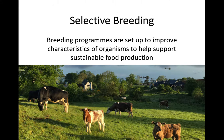Starting off, we're going to go back to talking about selective breeding and remind ourselves of what that actually means. There are breeding programmes set up in order to improve characteristics of organisms to support sustainable food production. We talked about sustainable food production in Key Area 1 and also mentioned selective breeding — these desirable traits that you want from either livestock or crops. We can set up these breeding programmes to pass on desired characteristics onto offspring, and that benefits food production in a sustainable way.